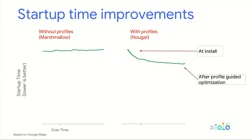Just how efficient is this technique? We gathered data from the field for the Google Maps application. The left chart presents data from a Marshmallow build, where startup time is constant over time — no fluctuation, which is expected. However, on the right-hand side in Nougat, the startup time drops over time and eventually stabilizes at about 25% faster than it was at install time. This means that the more the user uses the app, the more we can optimize it, and over time the performance gets better and better.